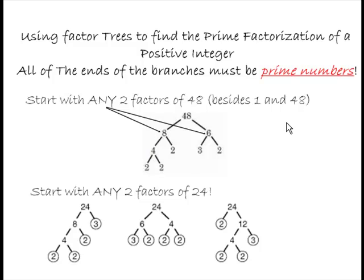This video deals with two different topics. First of all, number one, finding the prime factorization of a positive integer. We're going to do that using something called factor trees. And a little bit later on, the second thing we're going to look at is finding the greatest common factor of a polynomial — either a binomial or a trinomial — and factoring that polynomial by using the greatest common factor. Let's start with how do we do a factor tree.